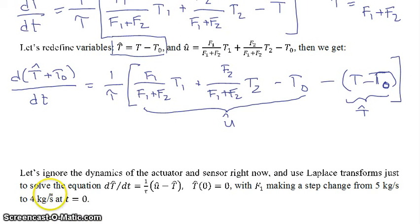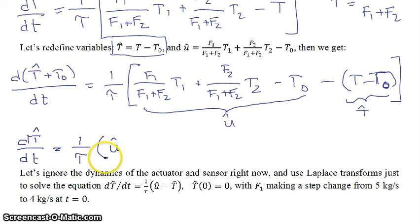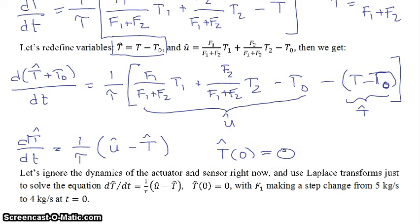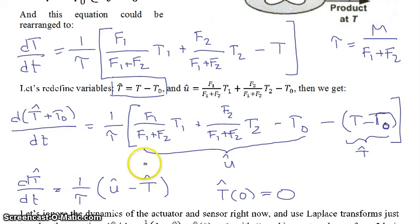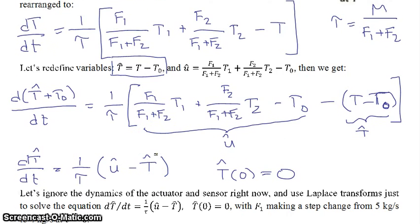With those simplifications and rearrangements, our equation becomes: d(T-hat)/dt equals 1 over tau times (u-hat minus T-hat), where T-hat of 0 equals 0, because as a deviation variable its initial condition is 0. So we've reduced a complicated equation to just two important terms: u-hat and T-hat.